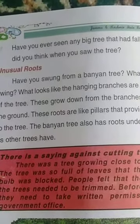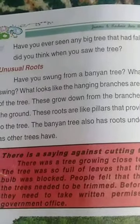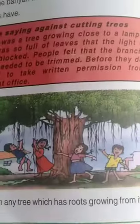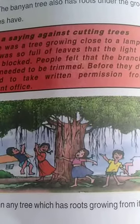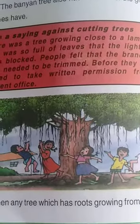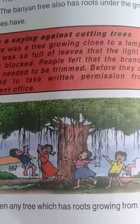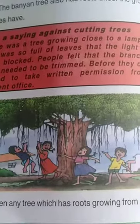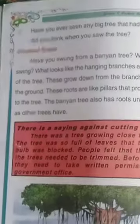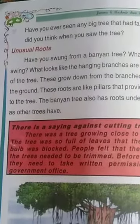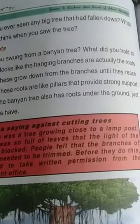We will see that if you have seen a banyan tree, it has branches from which unusual roots hang down. These hanging parts — which look like hanging branches — are actually roots. They grow down from the branches of the banyan tree until they reach the ground.